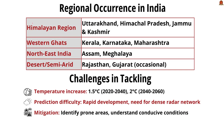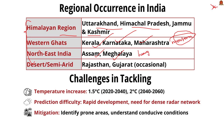Areas in India vulnerable to cloudbursts include: the Himalayan region — states like Uttarakhand, Himachal Pradesh, and Jammu & Kashmir due to orographic lifting of moist air masses. Western areas like Kerala, Karnataka, and Maharashtra during monsoon season due to southwest monsoon winds interacting with mountain ranges. The northeastern region — states like Assam and Meghalaya — due to heavy monsoonal rain and complex topography.